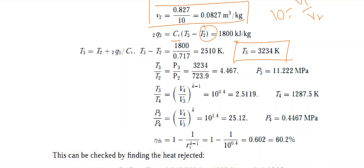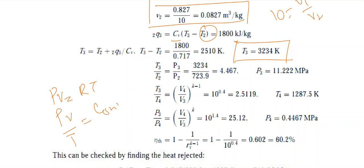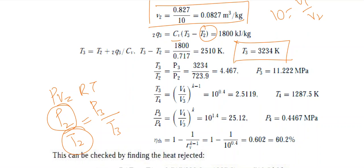Since the process is constant volume, using the ideal gas relation PV/T = constant: P2/T2 = P3/T3. We already know P2, T2, and T3, so we can easily find P3 = 11.222 MPa. Also, V3 = V2 since the volume remains constant through this process.